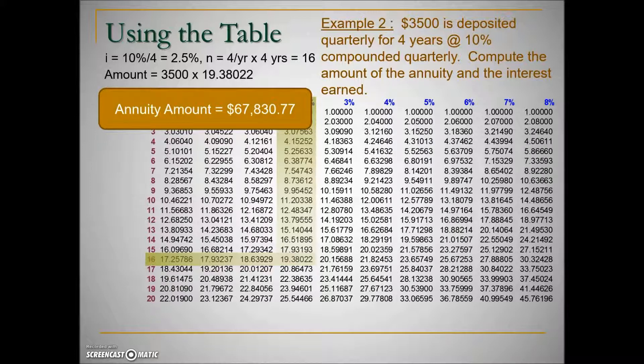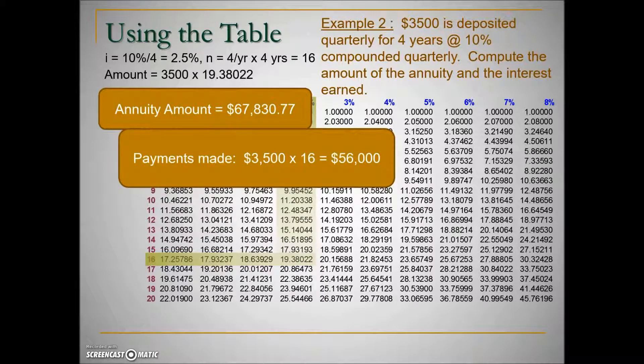Next they're asking us what is the interest earned. Before we determine that, we need to know how much money was actually deposited in this account. So we will take the regular deposit of $3,500 and times it by the total number of compounding periods or deposits being made, 4 times a year because it's quarterly for 4 years gives us the 16.